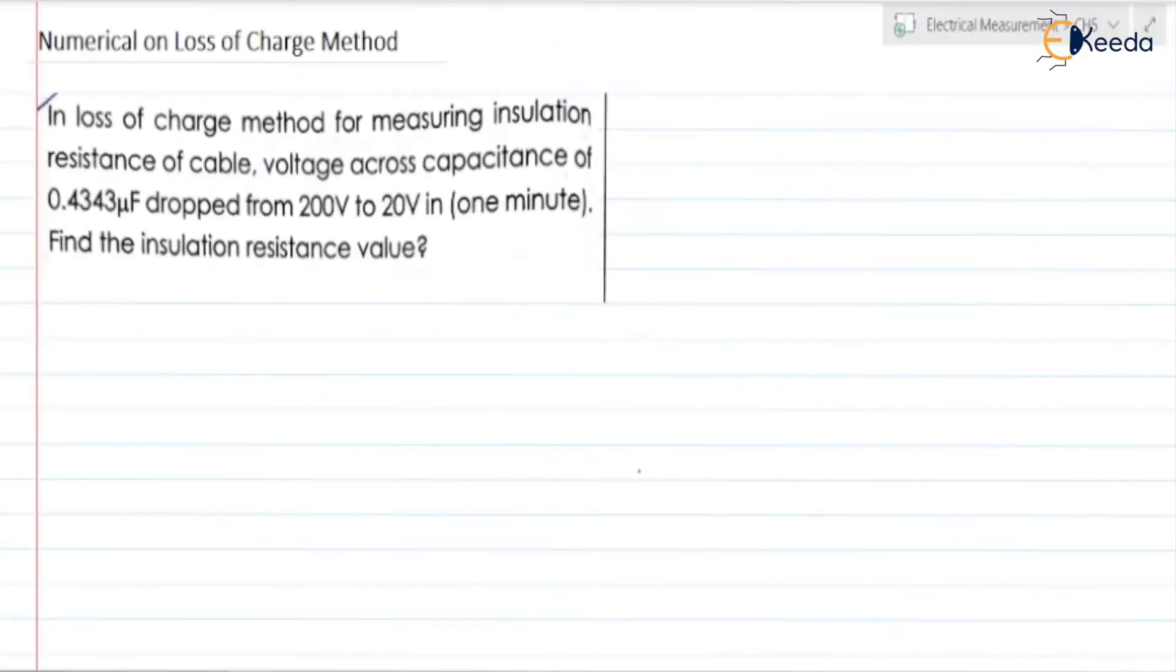Let us read the numerical. In loss of charge method for measuring insulation resistance of cable, voltage across capacitance of 0.4343 microfarad dropped from 200 volt to 20 volt in one minute. Find the insulation resistance value.